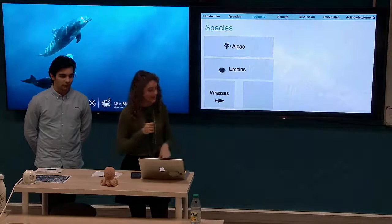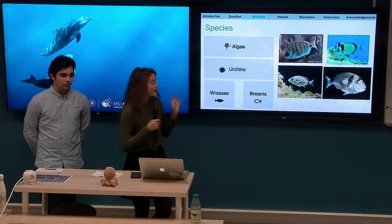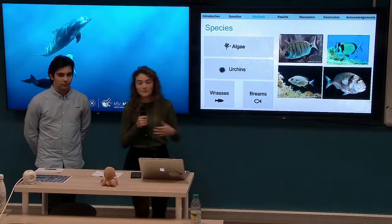Also for breams, we considered four species: two-banded bream, sea bream, annular bream, and gilt-headed bream. For these we also considered the number of individuals. The selection of predator species was made based on the bibliography, which identified these as the main predators of urchins in the Mediterranean Sea.